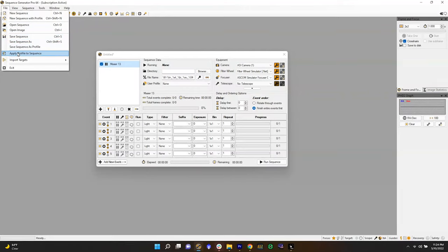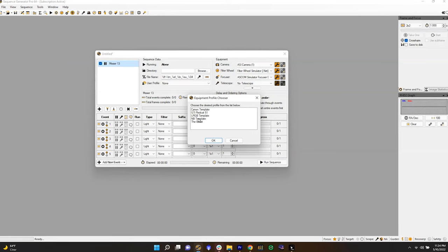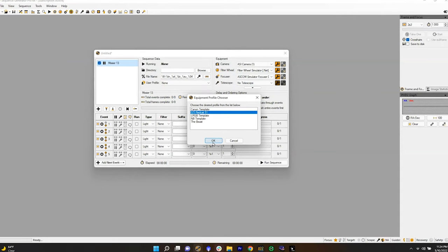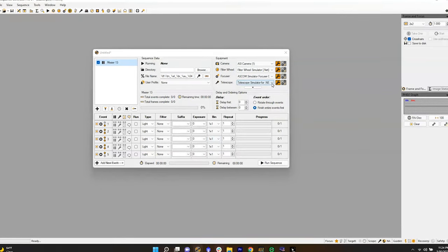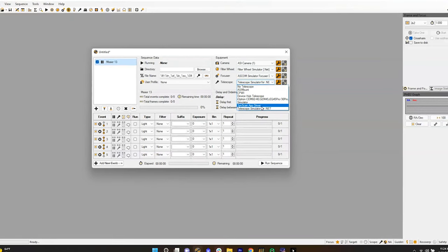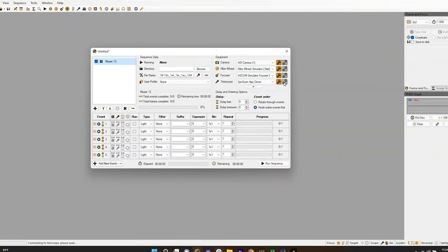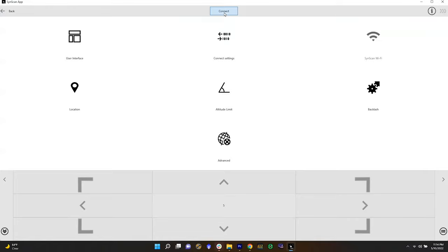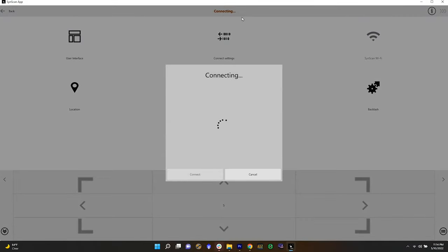So Sequence Generator Pro is my go to software for any imaging session and this is just what I'm personally used to. So I was able to open Sequence Generator Pro and I have all of my equipment and profile selected prior to mount connection. In the drop down menu under your mount selection panel it should read SynScan app. You do want to make sure that you connect through the SynScan app first otherwise you won't be able to connect to your third party software.